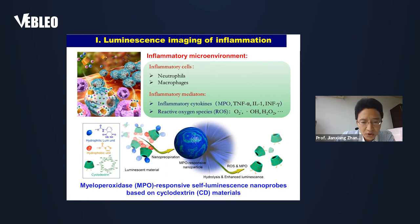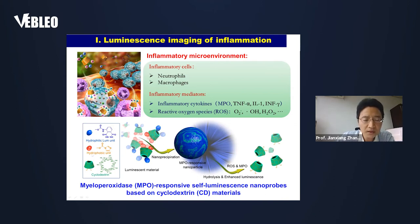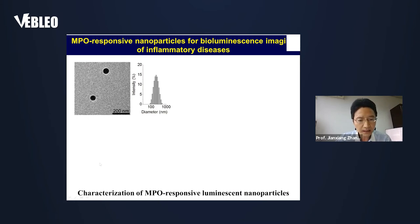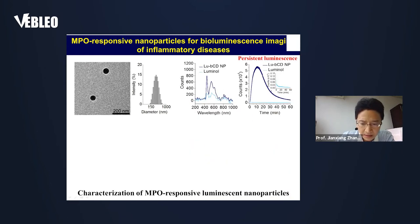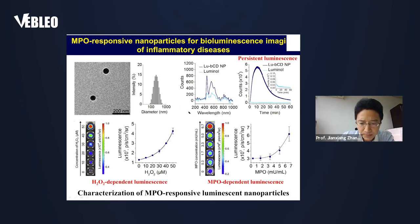According to these pathological changes, we first developed MPO-responsive afterglow luminescence nanoprobes based on cyclodextrin materials, obtained by conjugating luminol, a small molecular luminescent agent, onto cyclodextrin. Cyclodextrins are a type of cyclic oligosaccharide with good in vivo safety. In addition to characterization of the obtained nanoparticles, such as size distribution and morphology observation, we demonstrated desirable luminescence performance, particularly long-lifetime luminescence. The nanoprobes displayed both hydrogen peroxide and MPO-dependent luminescence.